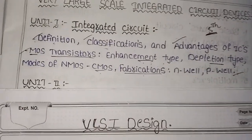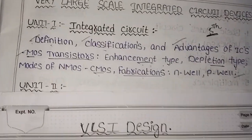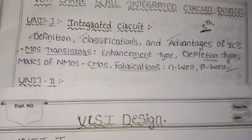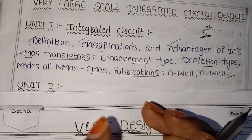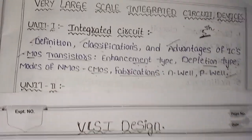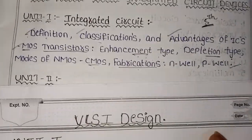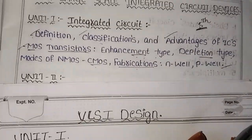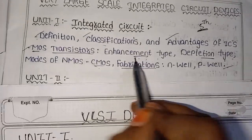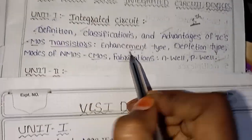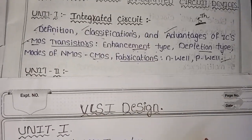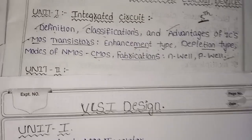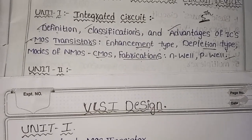For the MOS Transistor 10-mark question, you need to cover: the Enhancement Type — N-type and P-type. The first thing to include is the diagram, then the symbol, and then the logical diagram.